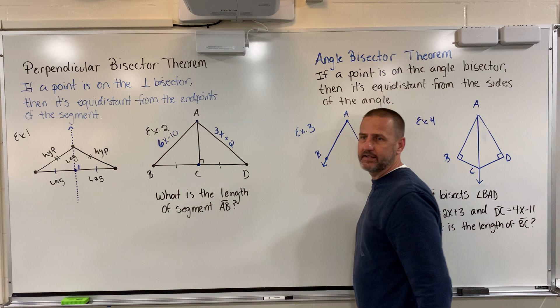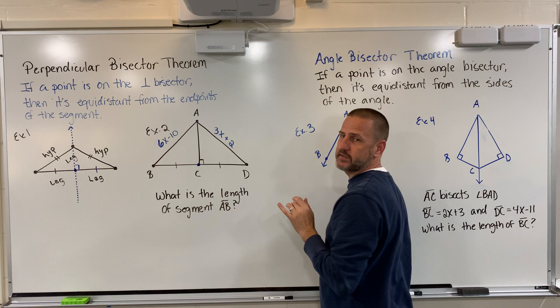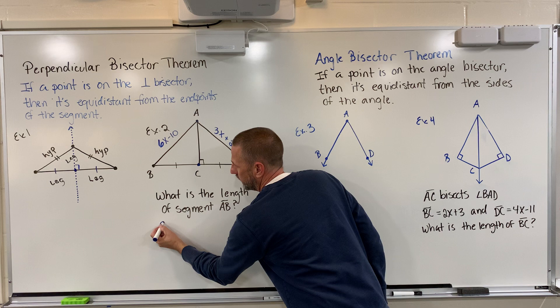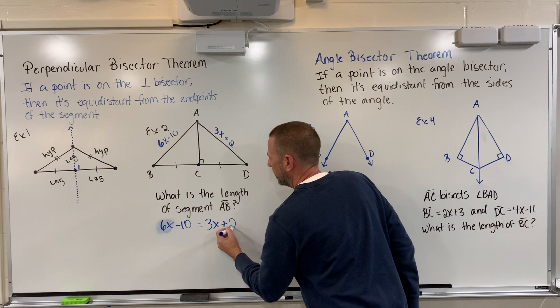That's telling me that AC is a perpendicular bisector, which means that this side, 6x minus 10, is equal to this side, 3x plus 2. We are going to need that to solve the problem. So we're going to start with 6x minus 10 equal to 3x plus 2.